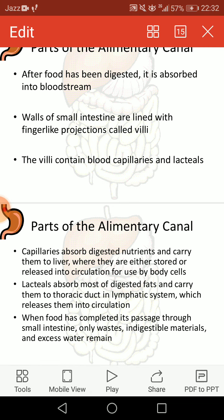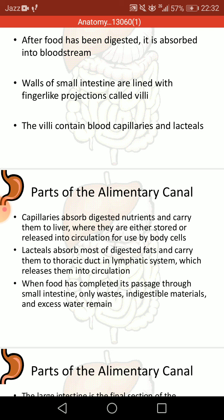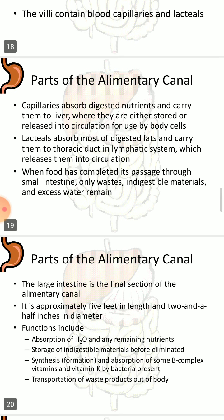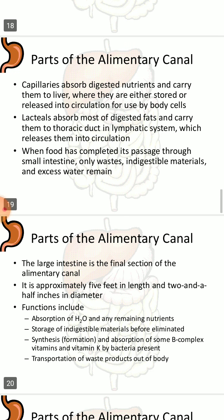After food is digested, it is absorbed into the bloodstream via the lining of the small intestine along with finger-like projections called villi. The villi contain blood capillaries and lacteals. The capillaries absorb digestive nutrients and carry them to the liver, where they are either stored or released into circulation for use by body cells. Lacteals absorb most of the digested fats and carry them to the thoracic duct in the lymphatic system, which releases them into circulation.